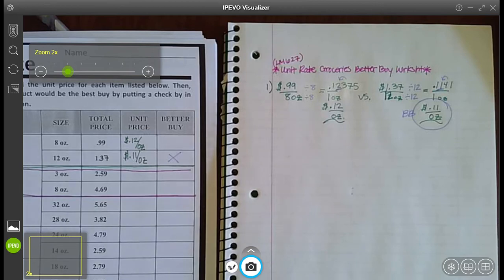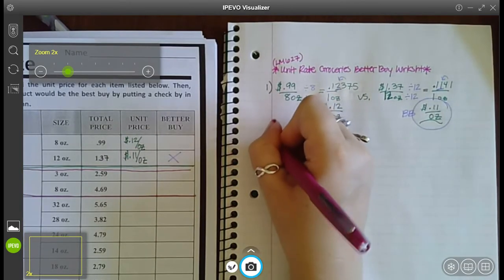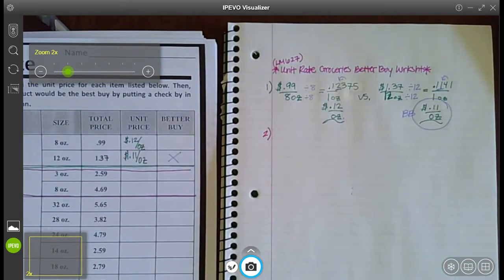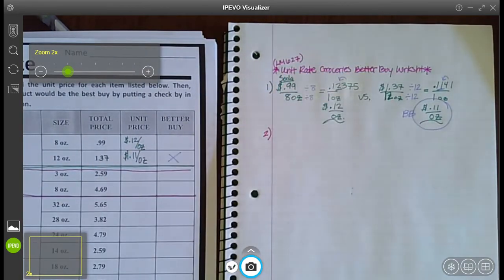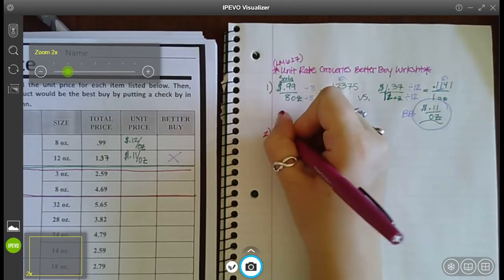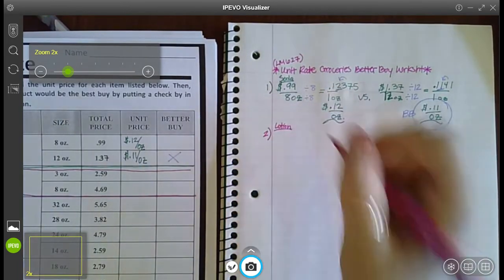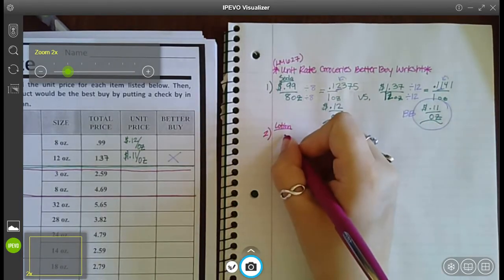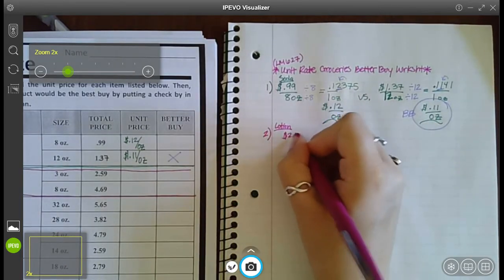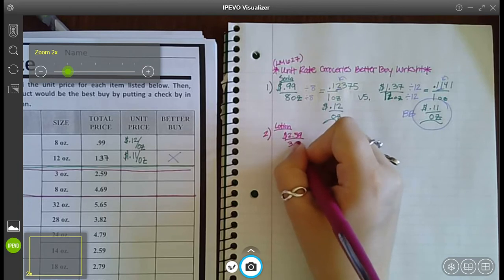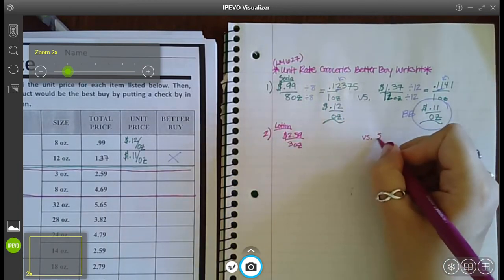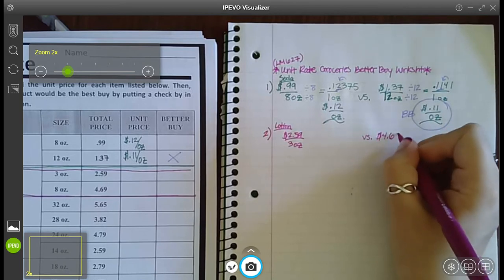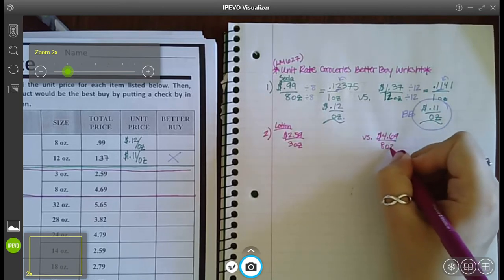What if I did number two? Okay, so number one, that problem was talking about soda. For number two, this one's talking about lotion. And for lotion, it says we have the two options of $2.59 for three ounces versus $4.69 for eight ounces.